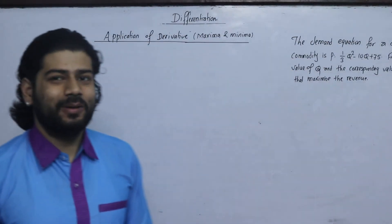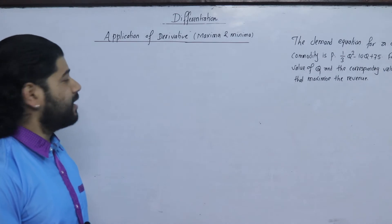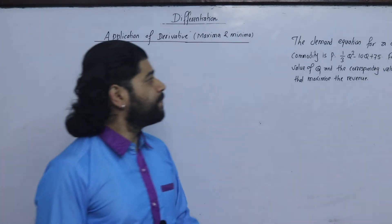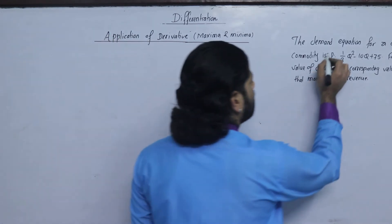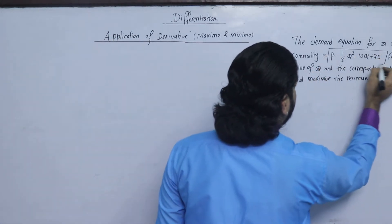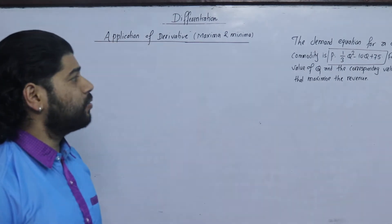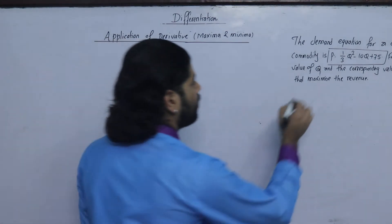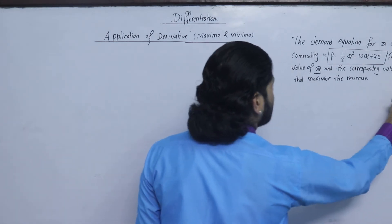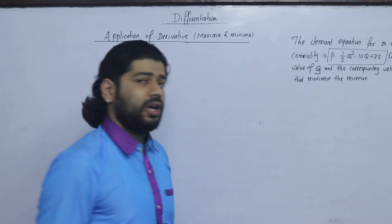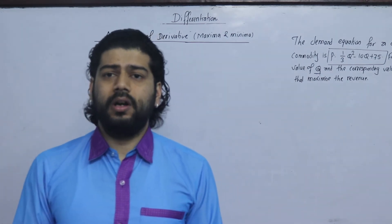Welcome to the question solved from the maximum or minimum application. The demand equation for a certain commodity is P equals 1/3 Q squared minus 10Q plus 75. Find the value of Q and the corresponding value of P, the price that maximizes revenue — the quantity produced and price.